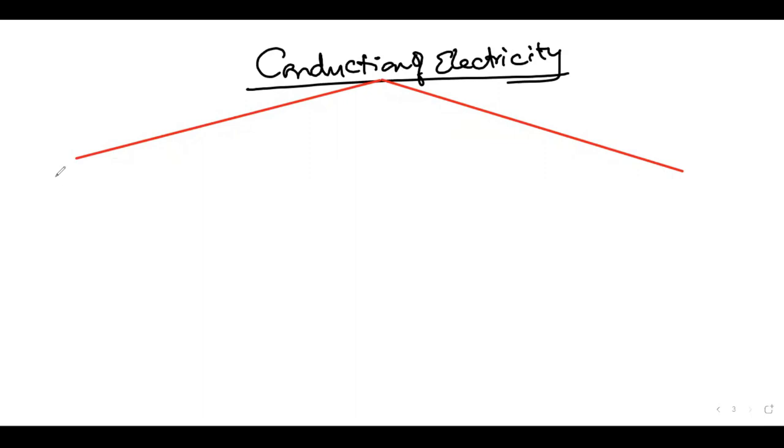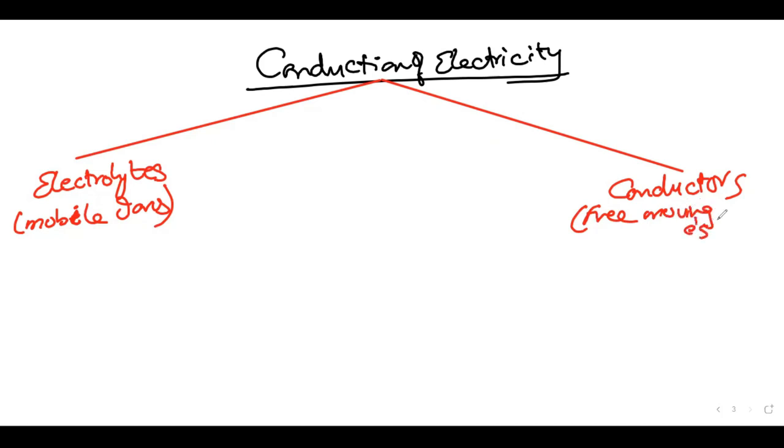This means that electricity is conducted by these two things: either electrolytes or conductors. Electrolytes and conductors are the difference between them.